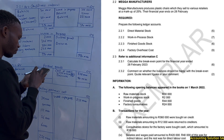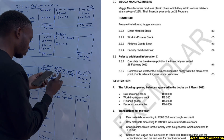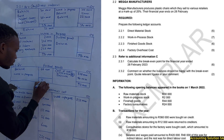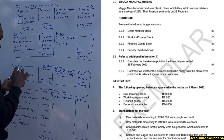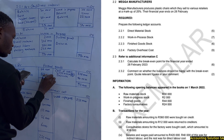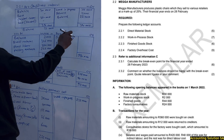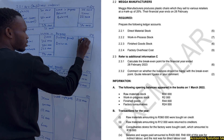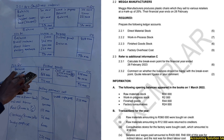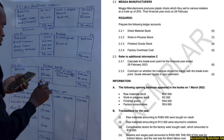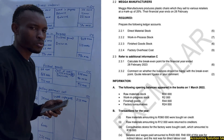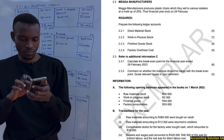Adding the finished goods closing balance: 828,000 plus 84,000 equals 912,000 on the credit side. The balancing figure for finished goods transferred to cost of sales is 868,000. Taking this back to work in progress: 990,000 minus 868,000 gives a work in progress closing balance of 122,000.